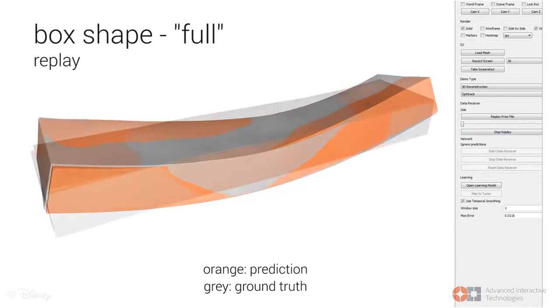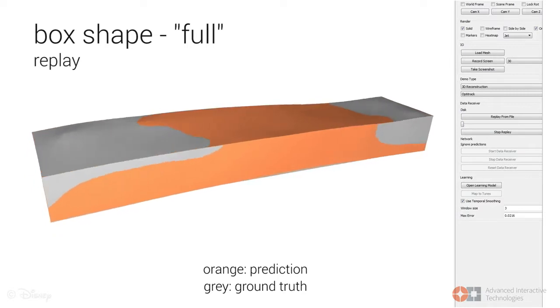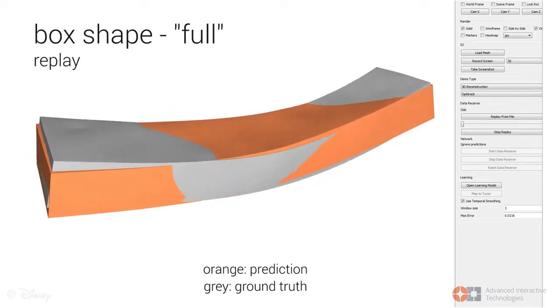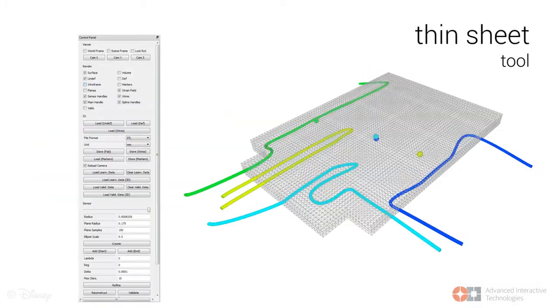The fabricated prototype, whose design was shown during the opening sequence, is able to accurately sense its shape even for strong deformations. We illustrate reconstruction accuracy by comparing ground truth from motion capture in grey together with the real-time reconstruction from sensor readings in orange.